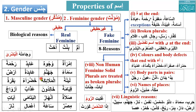Let's do some practice. Tell me whether each word is masculine or feminine. Imra'atun — feminine. What kind of feminine, hakiki or ghayr hakiki? Imra'atun means woman, so it is feminine due to biological reasons — real feminine. You can also say it is due to ta marbuta, which is also one reason.